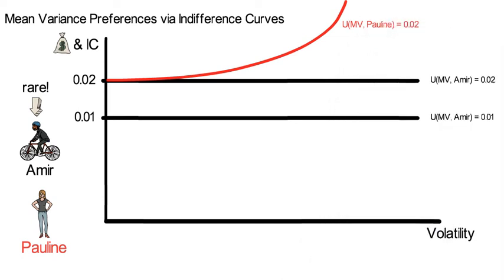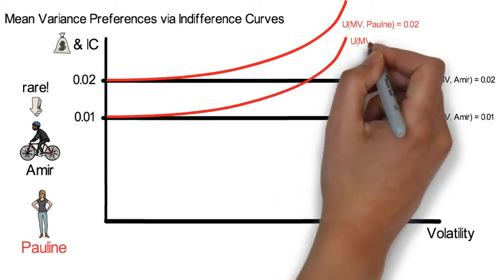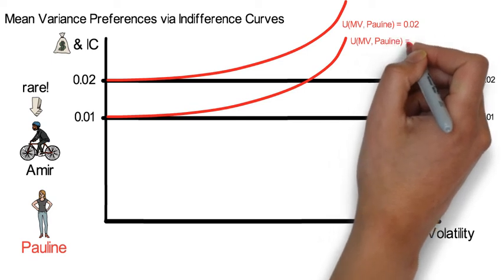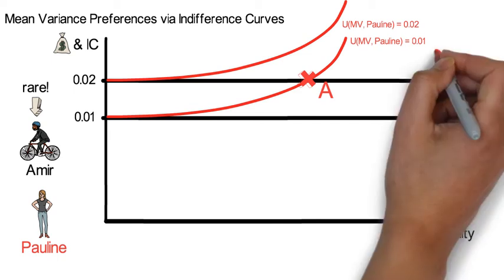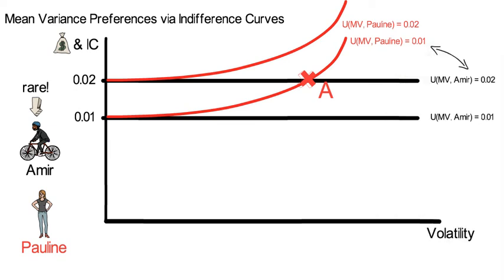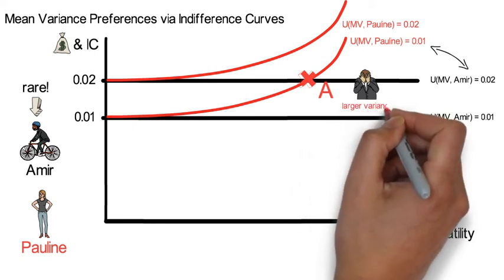Whereas Amir's indifference curves were horizontal. This says that Pauline is only willing to accept higher volatility of her wealth distribution if the level of expected future wealth increases sufficiently strongly. Also notice how an investment with an expected return volatility of A creates an expected utility of 0.02 to Amir but only an expected utility of 0.01 to Pauline. Pauline's expected utility is not increasing because she dislikes that investment A results in a larger variance.